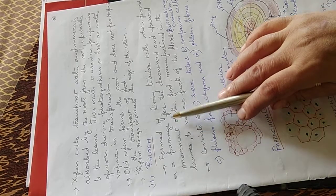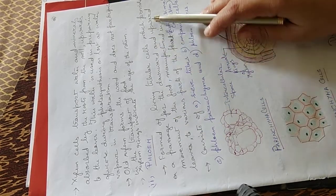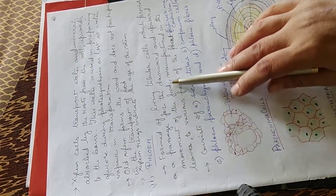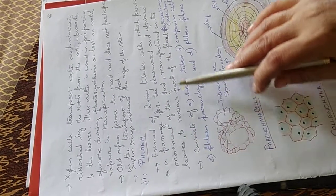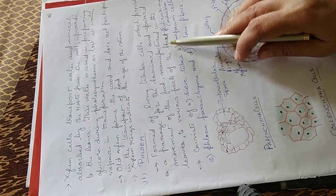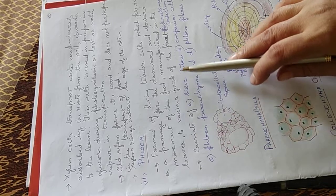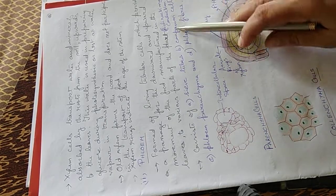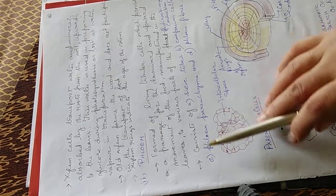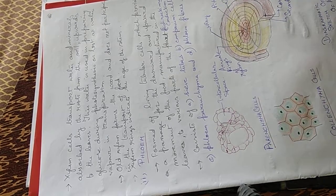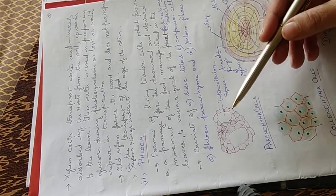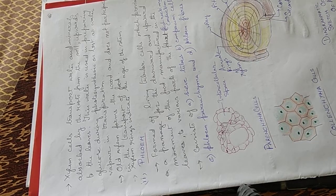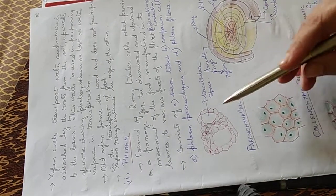Phloem forms of living tubular cells which provide a passage for the downward and upward movement of the food that are manufactured in the leaves to various parts of the plant, like bidirectional conduction. They consist of sieve tubes, companion cells, phloem parenchyma, and phloem fibers.